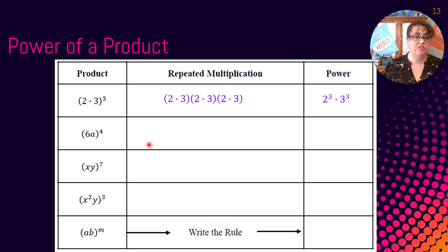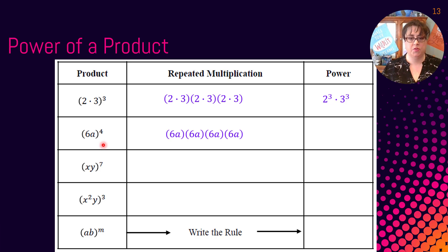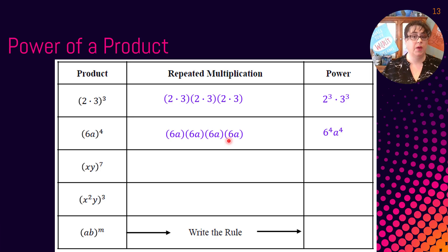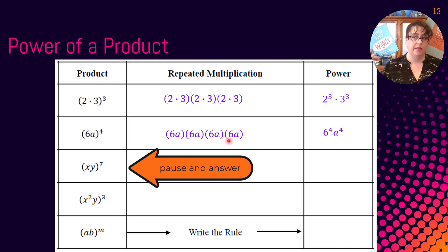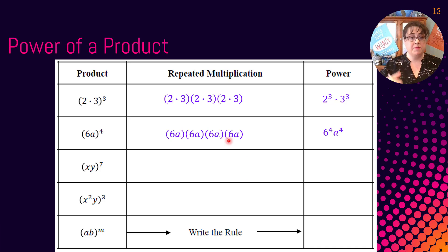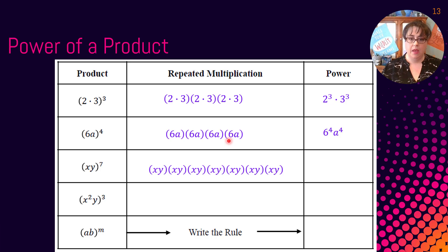For the next one, we need to take 6 to the a and do it 4 times, because everything is being raised to the fourth power. So how many 6s do we have? We have four of those 6s — so it'd be 6 to the fourth. And we also have four a's, so it'd be a to the fourth. The following one — the product of x times y to the seventh power — gives us x to the seventh and y to the seventh.